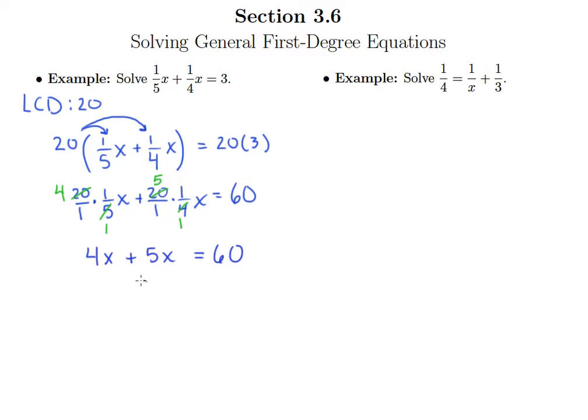4x plus 5x is 9x equals 60. Of course we want to divide both sides by 9. But we also want to make sure we have a reduced fraction and 3 goes into both 60 and 9. So our solution here is x equals 20 over 3.